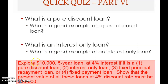Let's explore a ten-thousand-dollar, five-year loan at four percent interest in four scenarios: first, a pure discount loan; second, an interest-only loan; third, a fixed principal repayment loan; and fourth, a fixed payment loan. We'll explore the cash flow structure of each loan and show that the present value of all these loans at a four percent discount rate must equal ten thousand dollars.